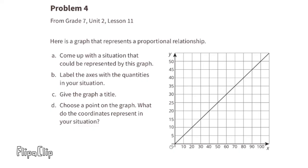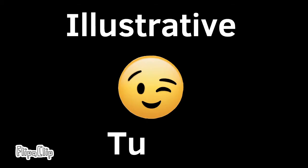Part D: choose a point on the graph — what do the coordinates represent in your situation? I choose the point at coordinates (20, 10): 20 represents the number of days, and 10 represents the number of houses painted. In 20 days, 10 houses were painted.